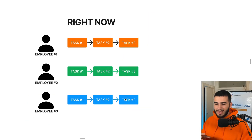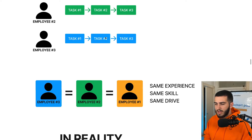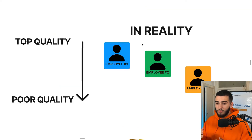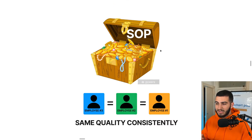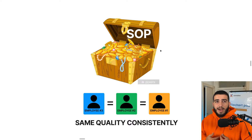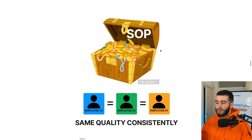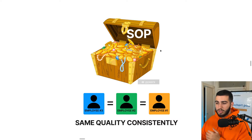Right now, let's say your employees are doing a task — each of them will have their own individual way of completing it, which isn't a problem if every employee has the same skill, drive, and experience. But in reality, this is not the case. There will be variation in quality between employees, which outputs different levels of work if you don't have an SOP they can follow. If you do have that, you can consistently output the same quality work regardless of who's doing the task, because they're simply following instructions.